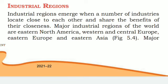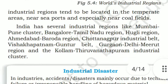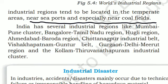Industrial regions emerge when a number of industries locate close to each other and share the benefits of their closeness. Major industrial regions of the world are Eastern North America, Western and Central Europe, Eastern Europe, and Eastern Asia. Major industrial regions tend to be located in the temperate areas near seaports, especially near coalfields.